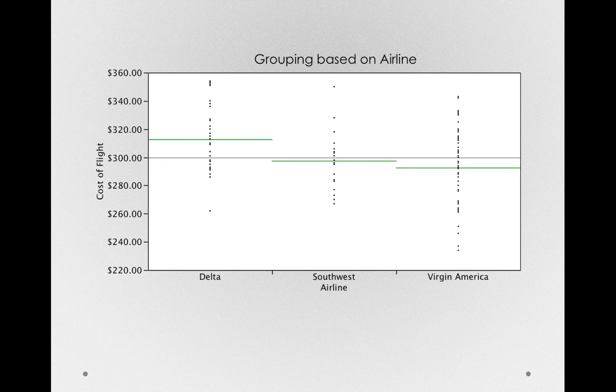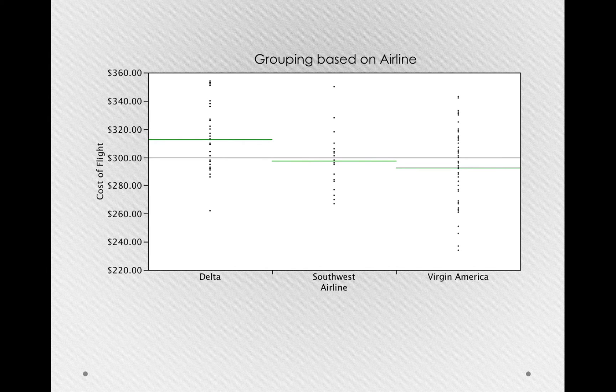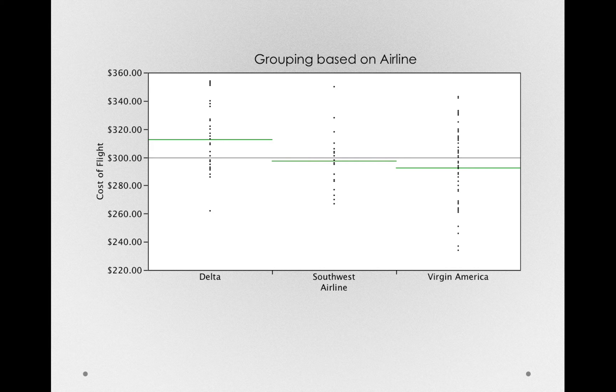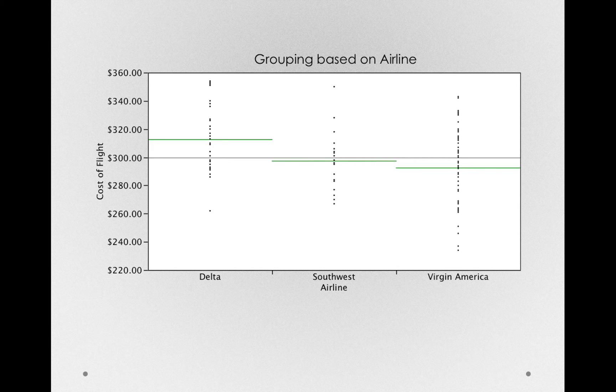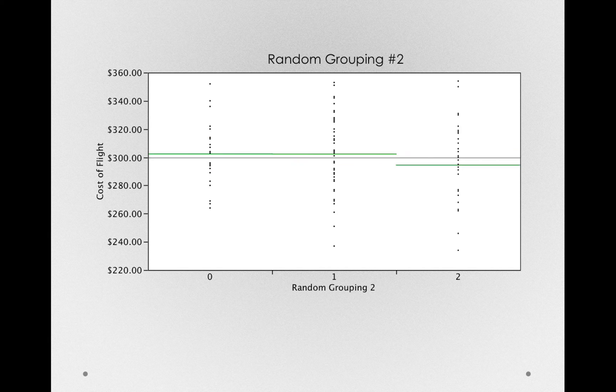Let's look at this graphically. If we look at our data, here's our grouping based on airline. And notice we have treatment offsets. That is, Delta, Southwest, and Virgin do differ from the grand mean. What we're trying to do, in essence, is determine whether this grouping is more different. That is, whether those treatment offsets are larger than what random grouping would be.